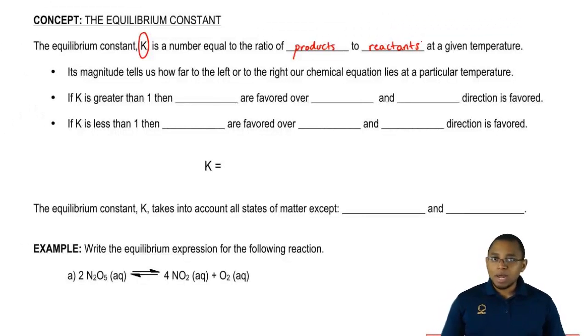Now we're going to say it's a ratio of products to reactants, so K equals products over reactants. K is important because its magnitude tells us how far to the left or to the right our chemical reaction is at a given temperature.